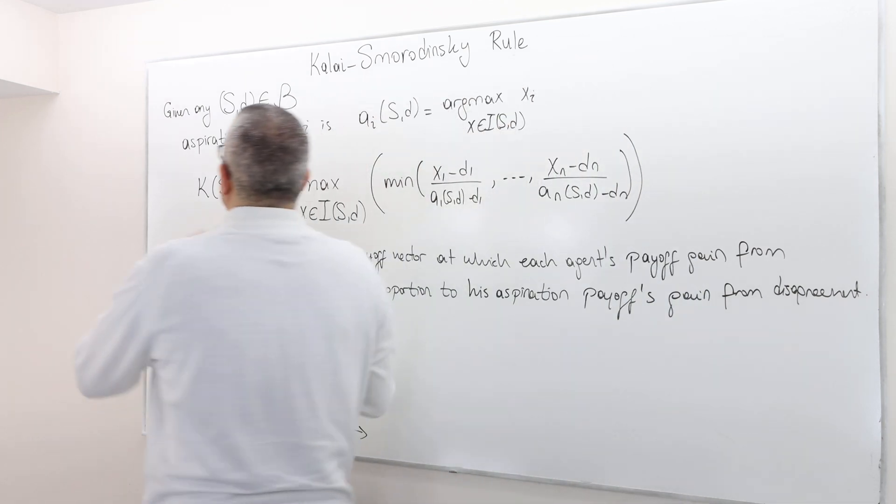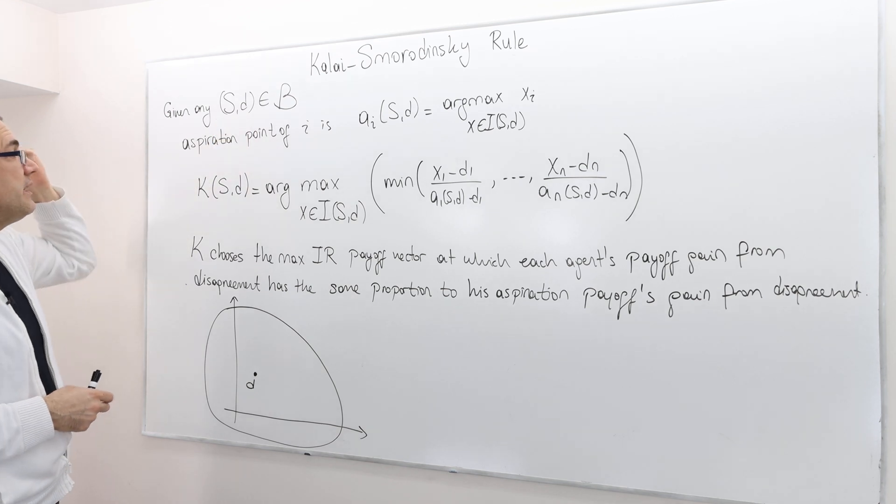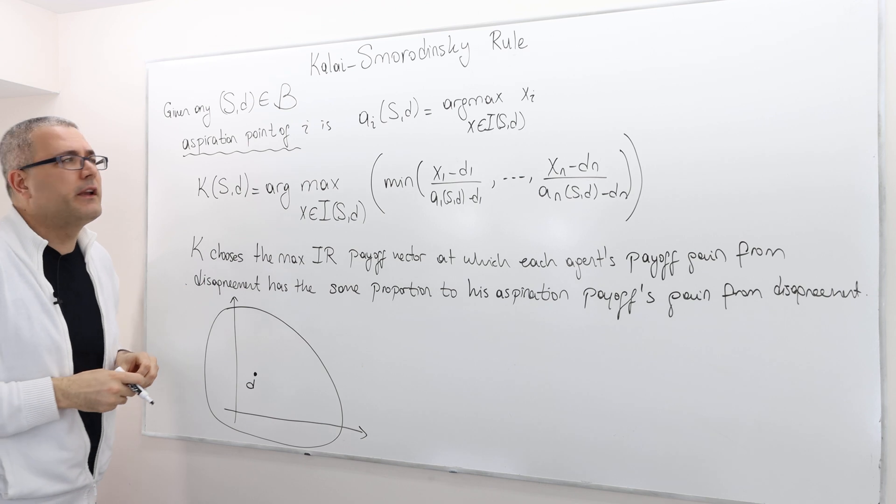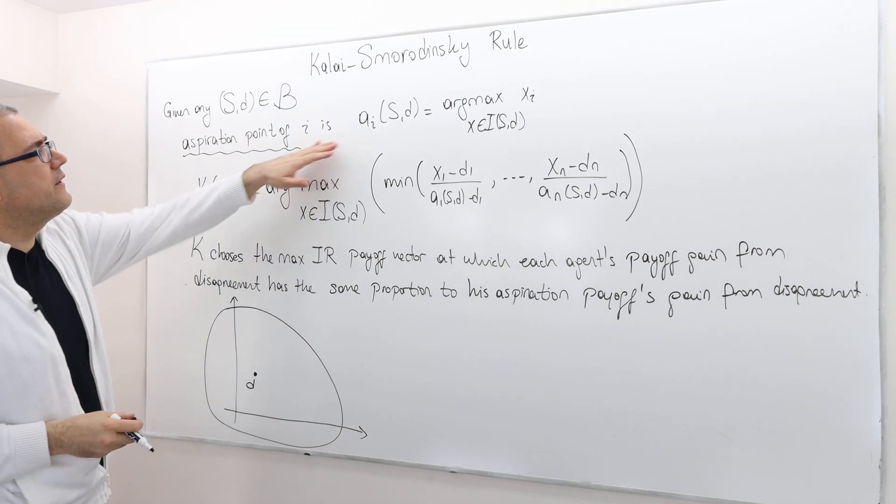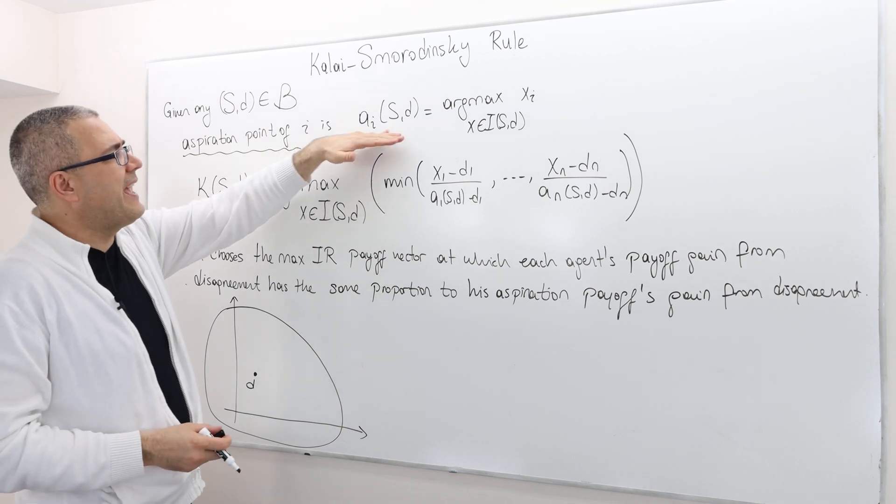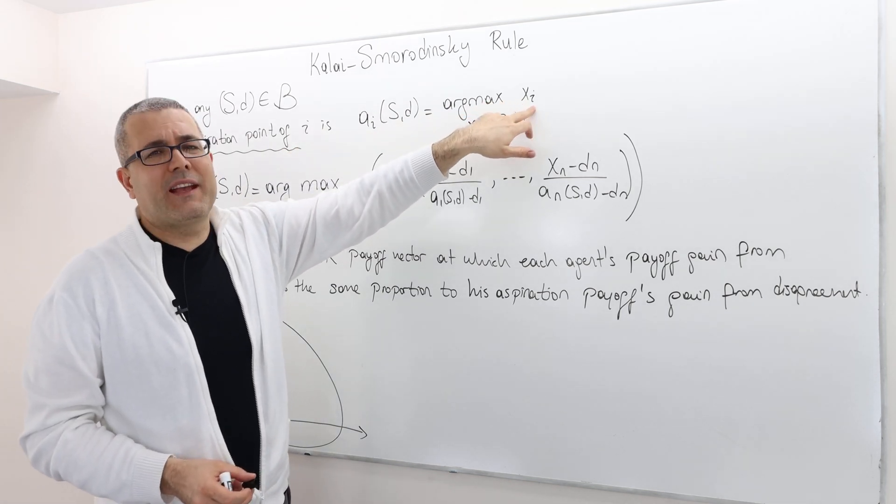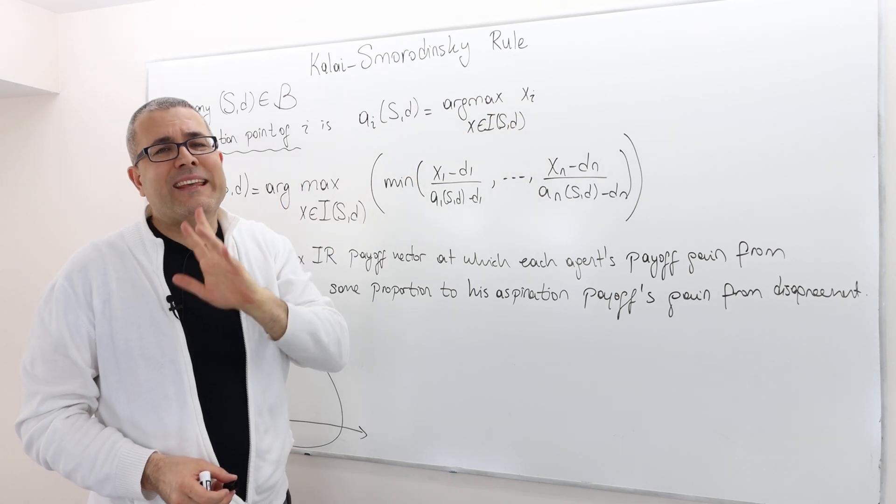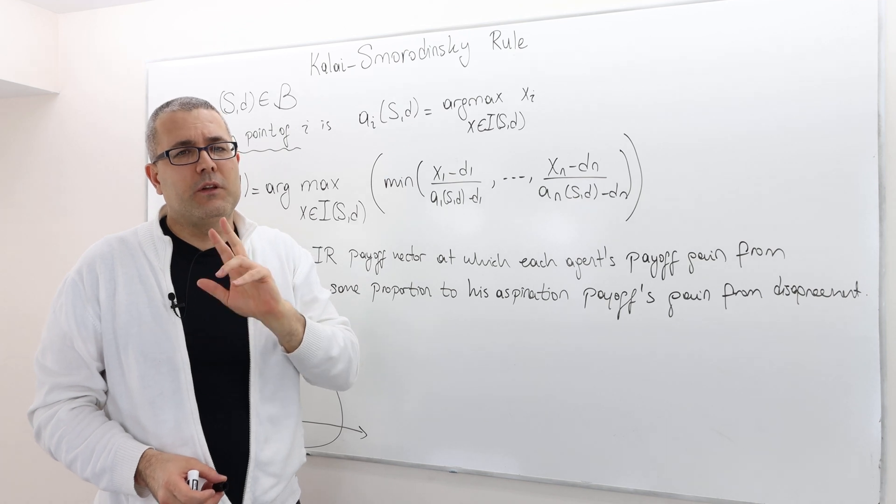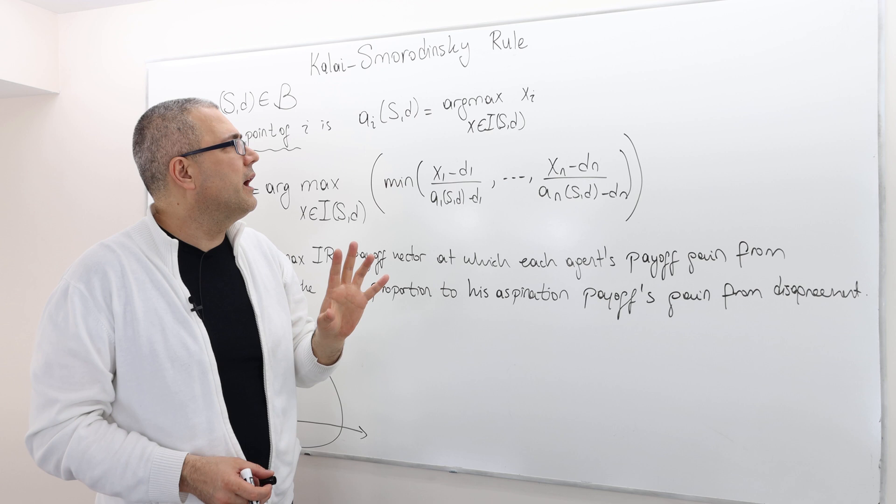How do we define it? For any bargaining problem SD, we define what's called the aspiration point of negotiator i. It's denoted by Ai(SD), and it's the maximum payoff player i can get within the set of individually rational and feasible payoffs of the bargaining problem.